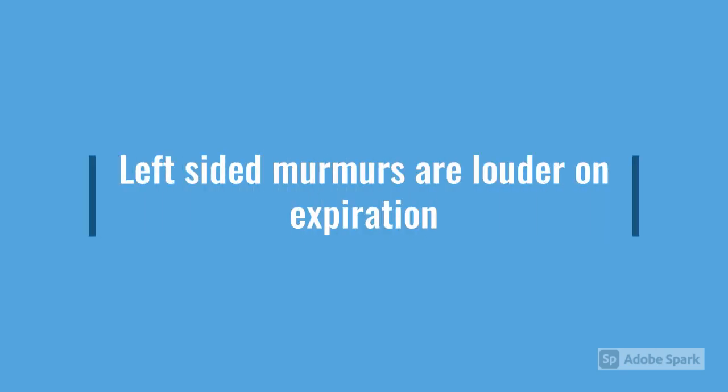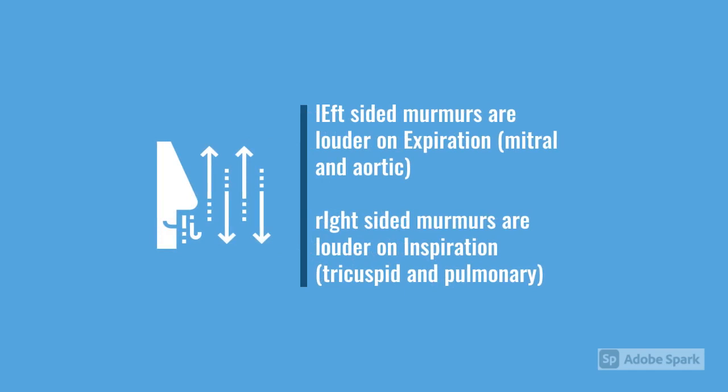Left-sided murmurs — mitral and aortic — are louder on expiration. A useful memory aid: there's an E in left, which corresponds to expiration, and there's an I in right, which corresponds to inspiration.